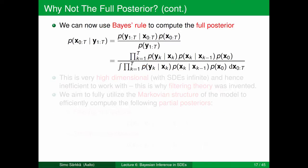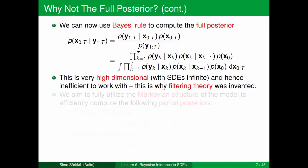We can now in principle use Bayes' rule to compute the full posterior distribution of x's. The joint probability density of x's from 0 to t given all the measurements equals the joint probability density of measurements given all the x's times the prior distribution of x's, divided by a normalization constant which is just the integral of the numerator. This distribution is very high dimensional, and in the case of SDEs where we consider all times continuously this distribution would be infinite-dimensional. It's very inefficient to work with explicitly, and that's why we have filtering theory which tries to do the computations more wisely.